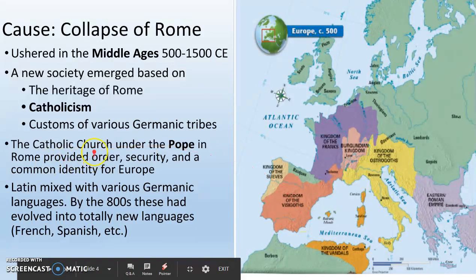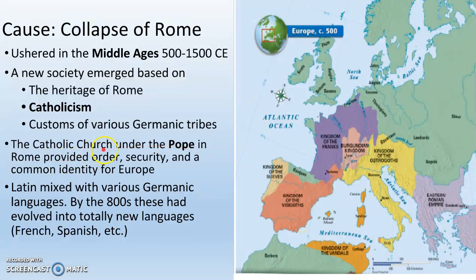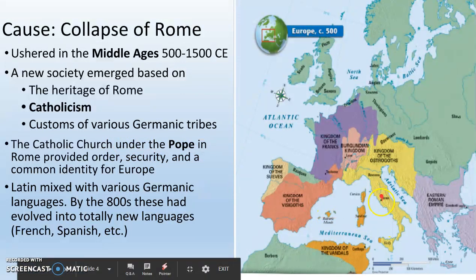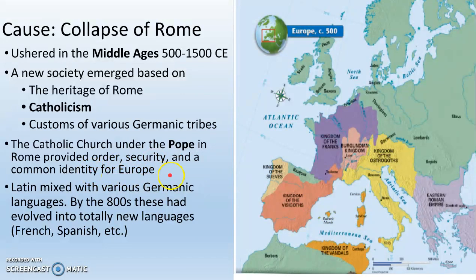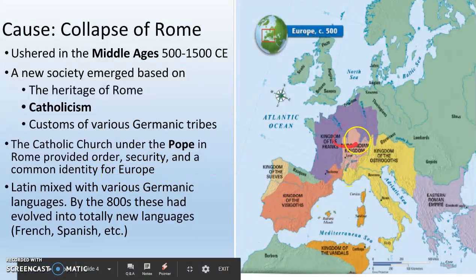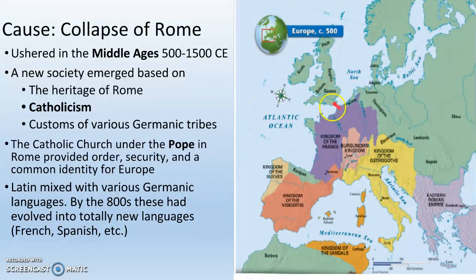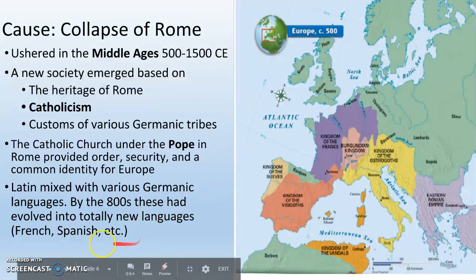The Catholic Church, to this day, has a head theological figure known as the Pope. The Pope is the guy in charge of the Catholic Church, and he lives in the city of Rome. Even though the Western Roman Empire is gone, he still lives in the city of Rome and provides order, security, and a common identity for Europe. So even though you live in the Kingdom of the Visigoths or the Kingdom of the Franks or in modern-day England, you still are Catholic, so you have something in common with everybody else.